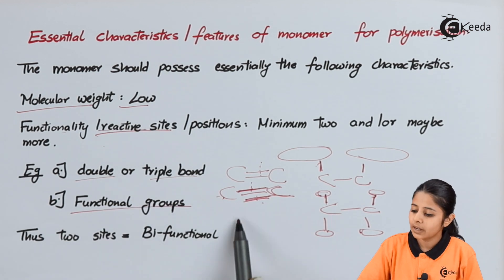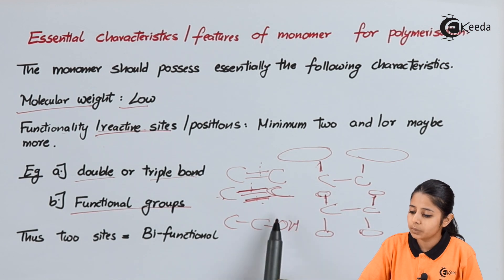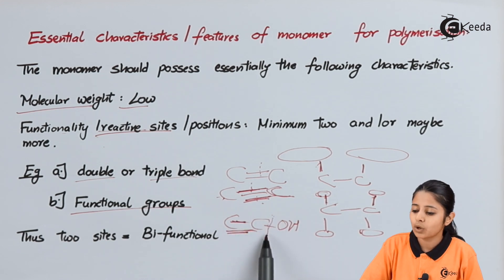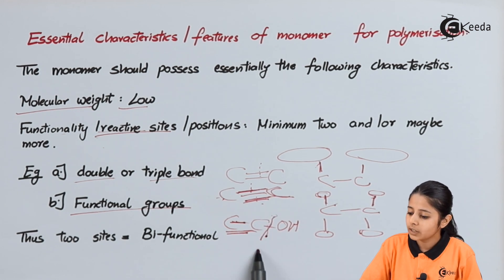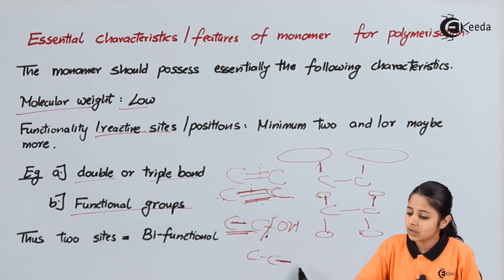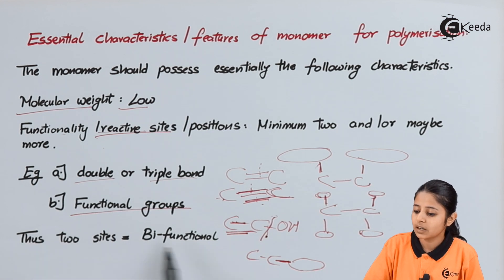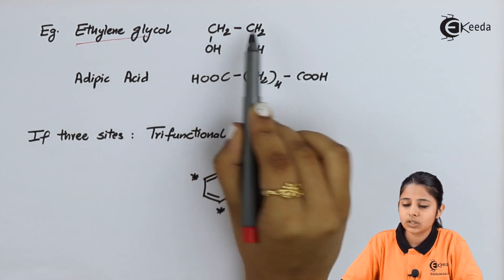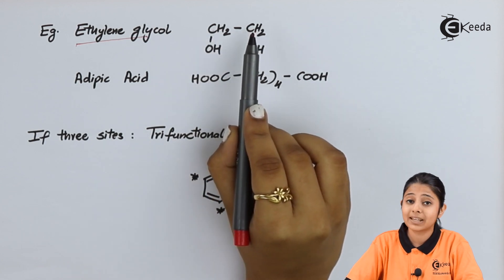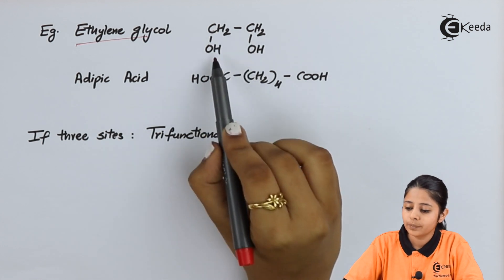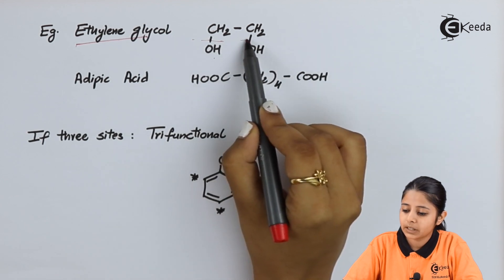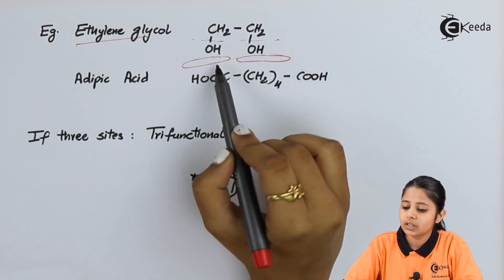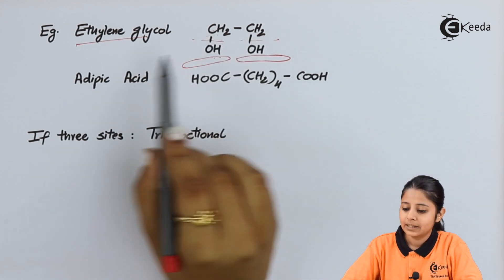Next are functional groups. In a C-C-O-H chain, it is easier to break the C-O-H bond than the strong covalent C-C bond. Once the C-O-H bond breaks, the free carbon bond can link to something else to form a polymer. Two such sites are known as bifunctional. For example, ethylene glycol (HO-CH₂-CH₂-OH) has two C-O-H bonds that can be broken, giving two reactive points where other molecules can attach, making it bifunctional.